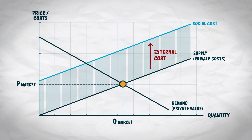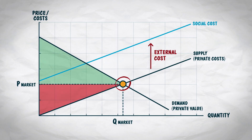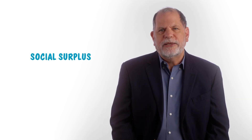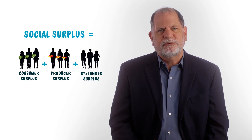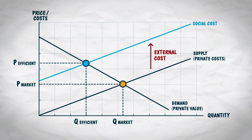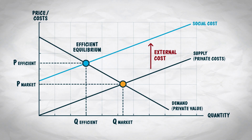We can add the external cost to the private supply curve to make a new curve — the social cost curve. The social cost is the cost to everyone, including bystanders. The vertical distance here is the external cost, the cost to bystanders. The market equilibrium shows the quantity the market produces — the quantity that maximizes producer and consumer surplus. But we want to maximize social surplus, which is the total net value created: the sum of consumer surplus, producer surplus, and bystander surplus. Since we have large external costs, we don't want to produce at the market equilibrium. We want to produce where the social cost curve intersects the demand curve. That's where social surplus is maximized. The market equilibrium quantity is higher than the socially efficient quantity.